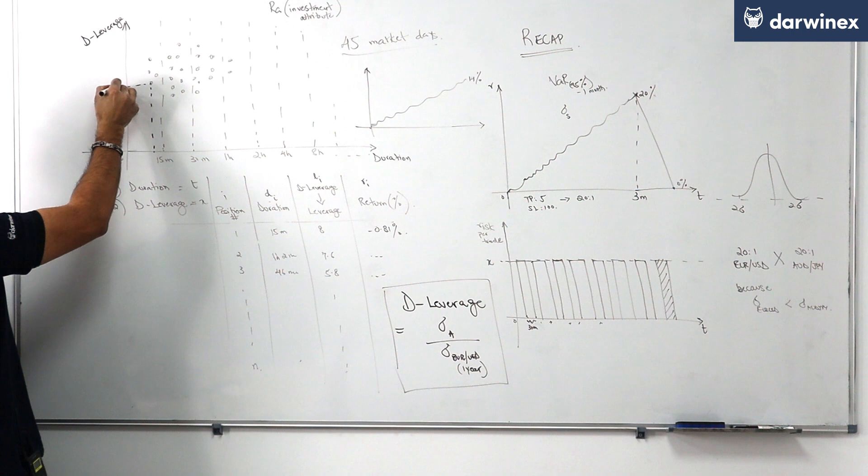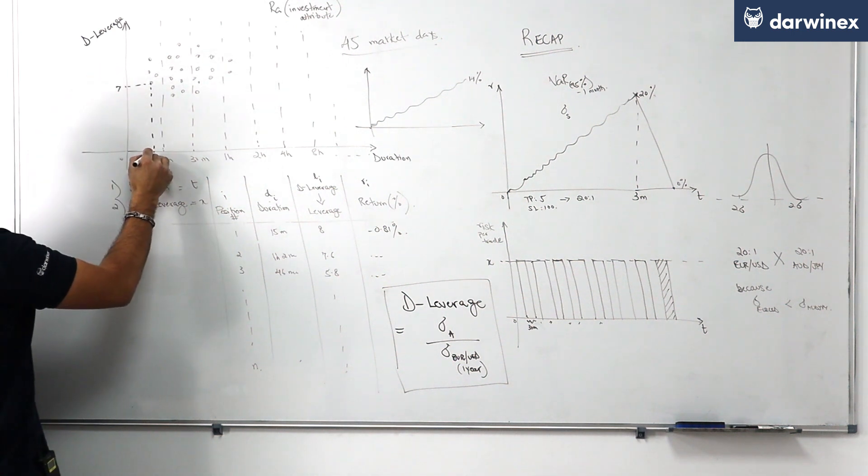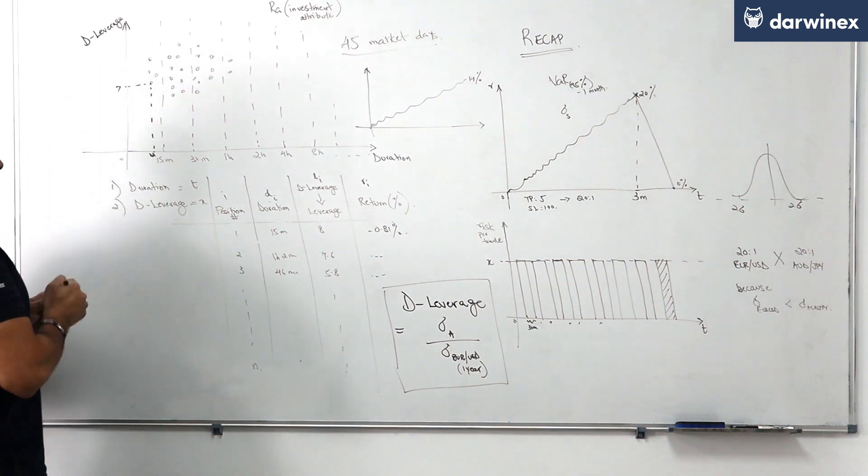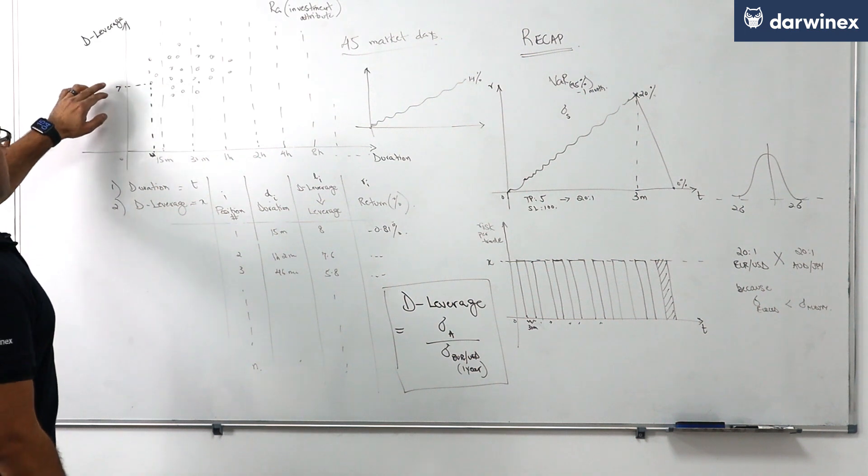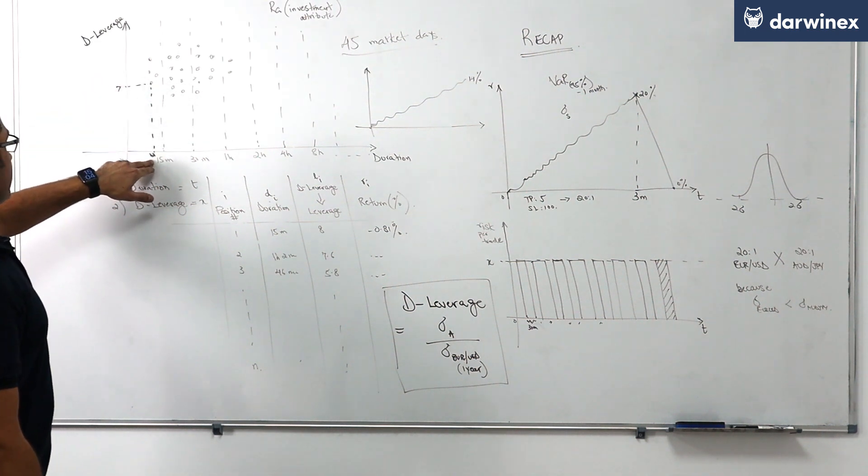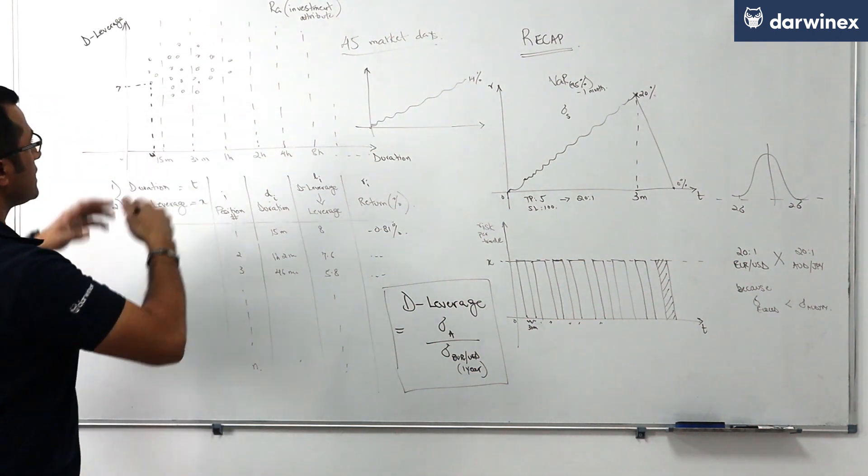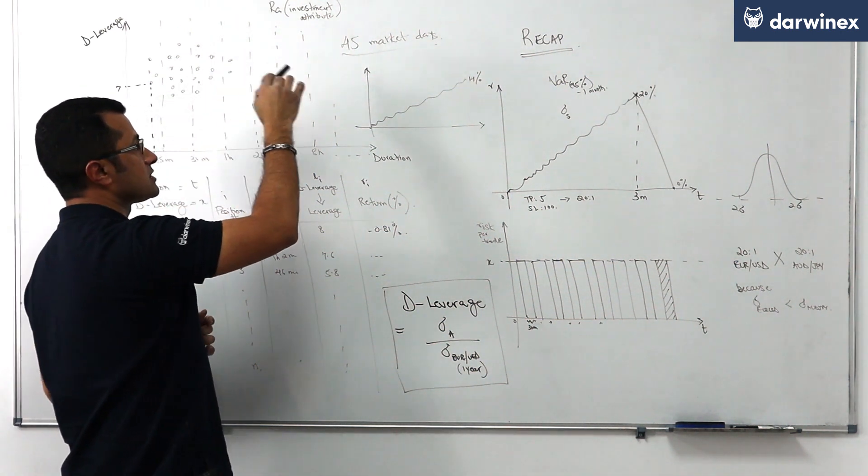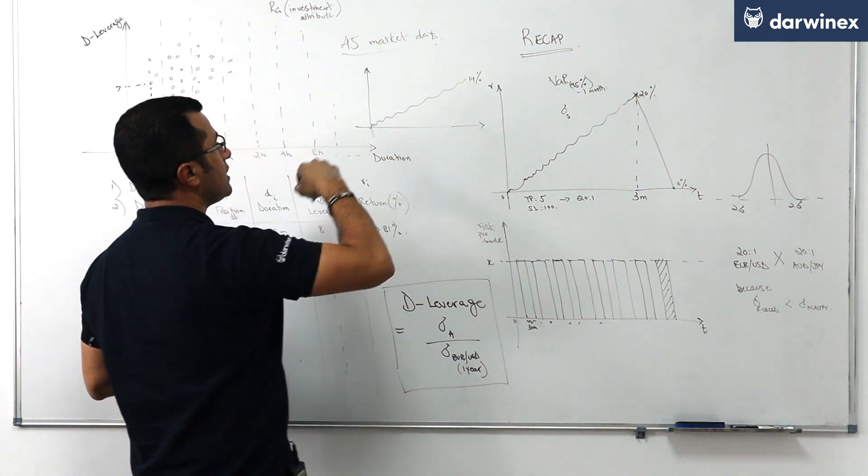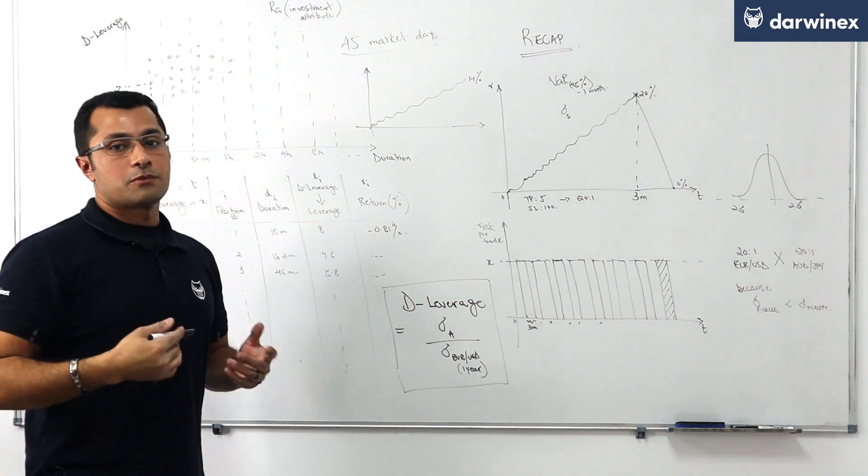So for example this position here let's imagine that number is seven and that's 12 minutes then this position here had a duration of less than 15 minutes and had a deleverage of seven. What this chart is capturing is the last 45 market days worth of risk-taking behavior on the part of the trader.